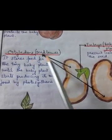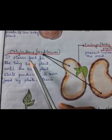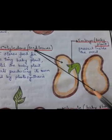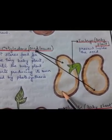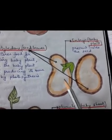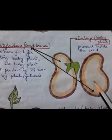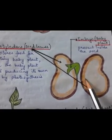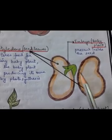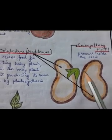Now we'll look at the cotyledon, also known as seed leaves or endosperm. Under the seed coat is the endosperm — you can call it endosperm, seed leaves, or cotyledons. Cotyledons occupy the maximum part of the seed, as you can see here. They store food for the baby plant.